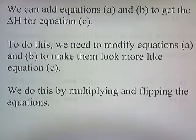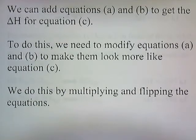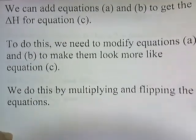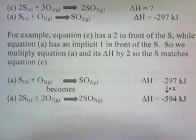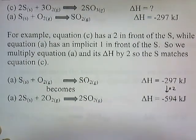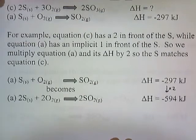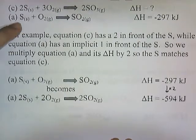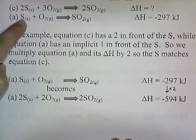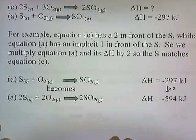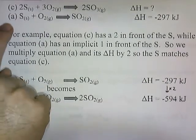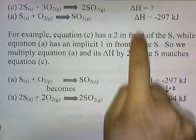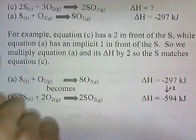To do this, we need to modify equations A and B to make them look more like equation C, and we do this by multiplying and flipping the equations. For example, equation C has a 2 in front of the S, while equation A has an implicit 1 in front of the S. So we're going to multiply equation A and its delta H by 2 so that the S matches equation C.